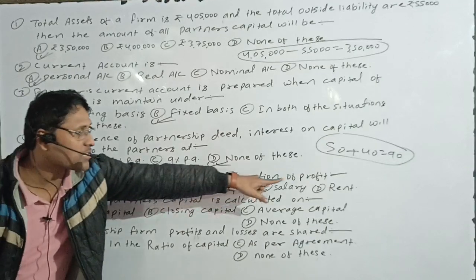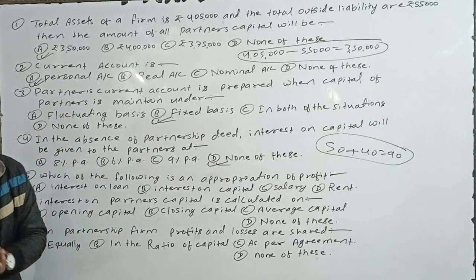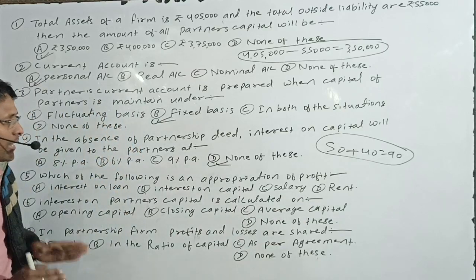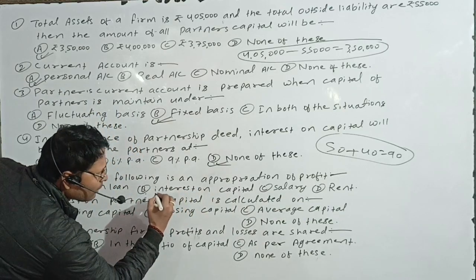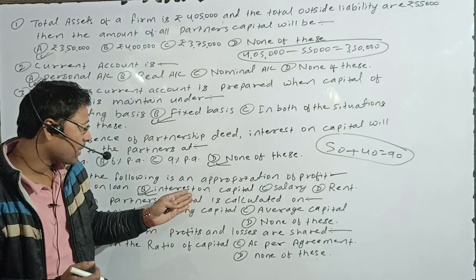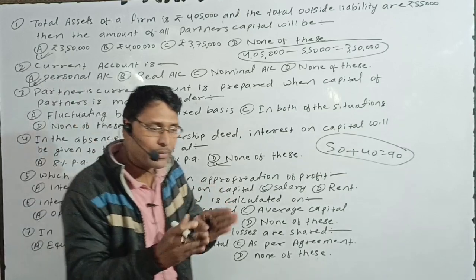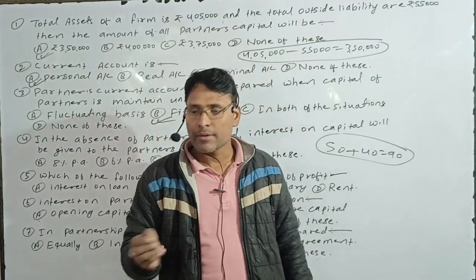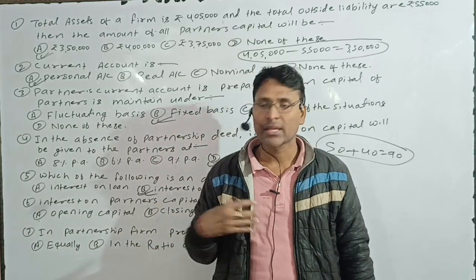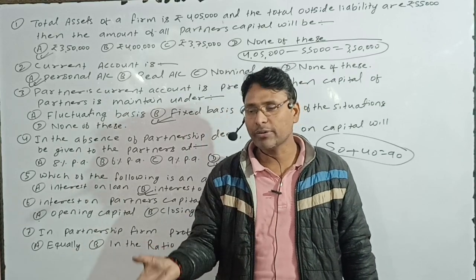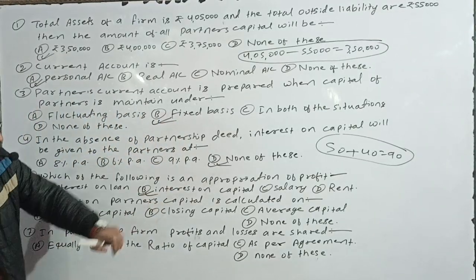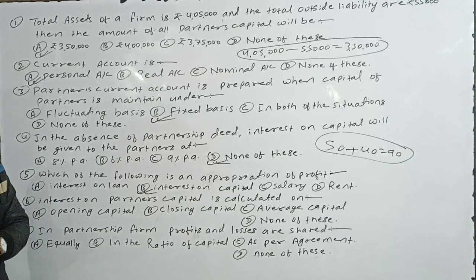Which of the following is an appropriation of profit? The options are interest on loan, interest on capital, salary, and rent. Appropriation of profit is the distribution of profit — we give interest on capital, salary to partners, and share profit. Interest on capital is an appropriation of profit. That is the right answer.